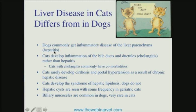When dogs get hepatitis, most of the time they just have hepatitis, whereas when cats get cholangitis, they commonly have comorbidities, especially of the pancreas and of the intestinal tract — we'll talk more about that. When cats get liver disease, even inflammatory liver disease, it rarely progresses to cirrhosis, whereas that is of course the end result in many dogs with hepatitis unless there's a treatment intervention.